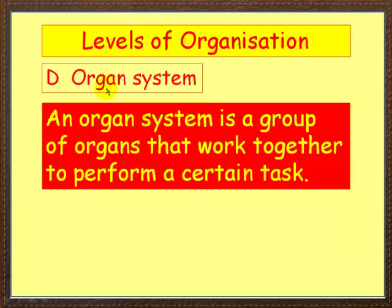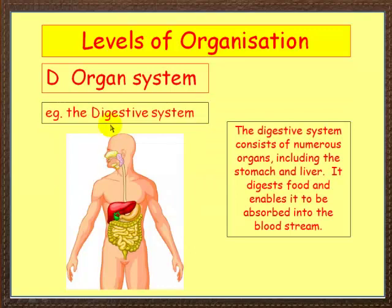The top level of organization is the organ system — a group of organs that work together to perform a certain task. Here we've got the digestive system, which consists of numerous organs including the stomach and the liver. It digests food and enables it to be absorbed into the bloodstream in the small intestine. Finally, undigested food leaves via the anus.